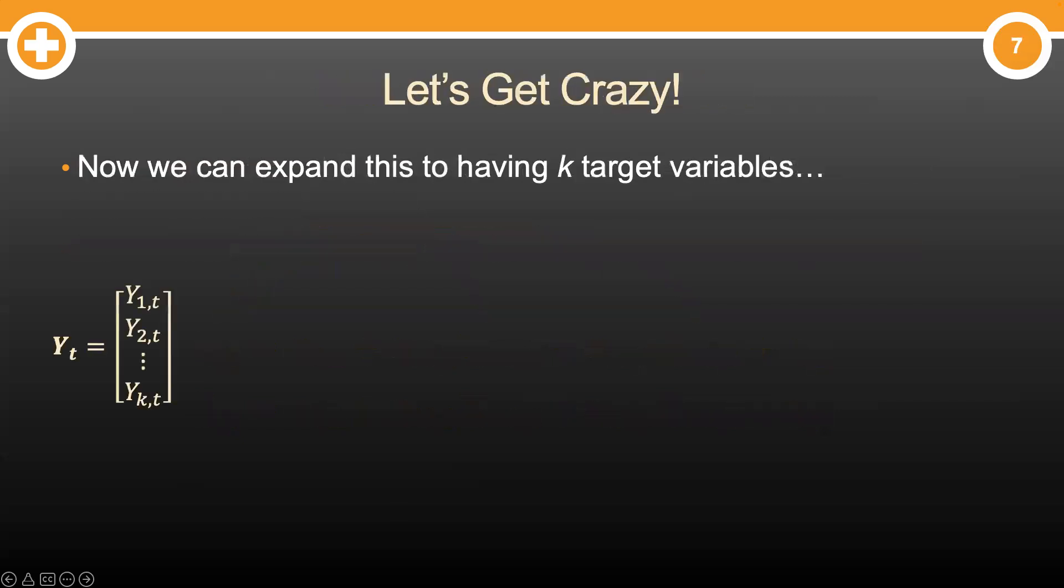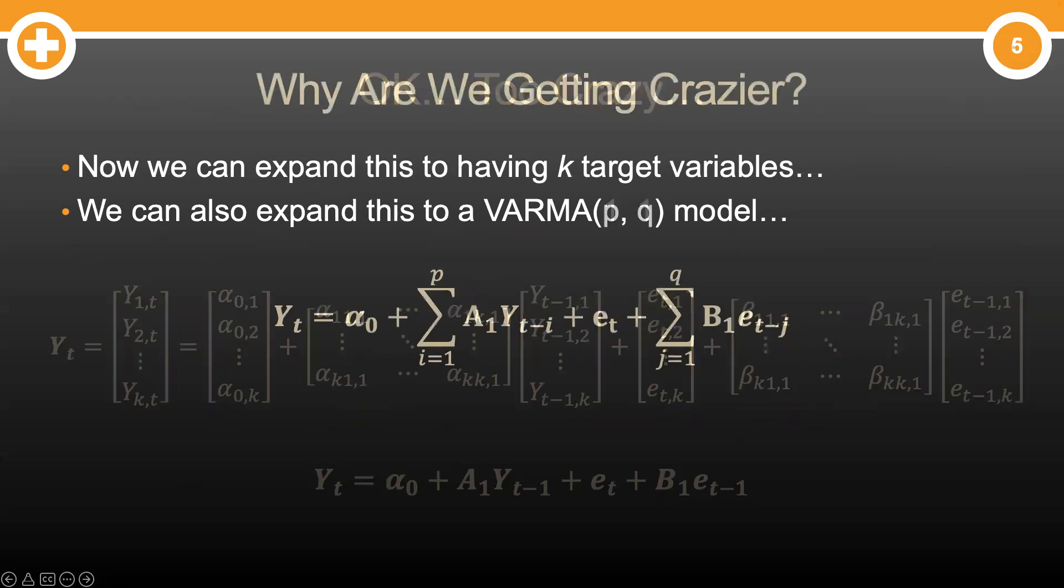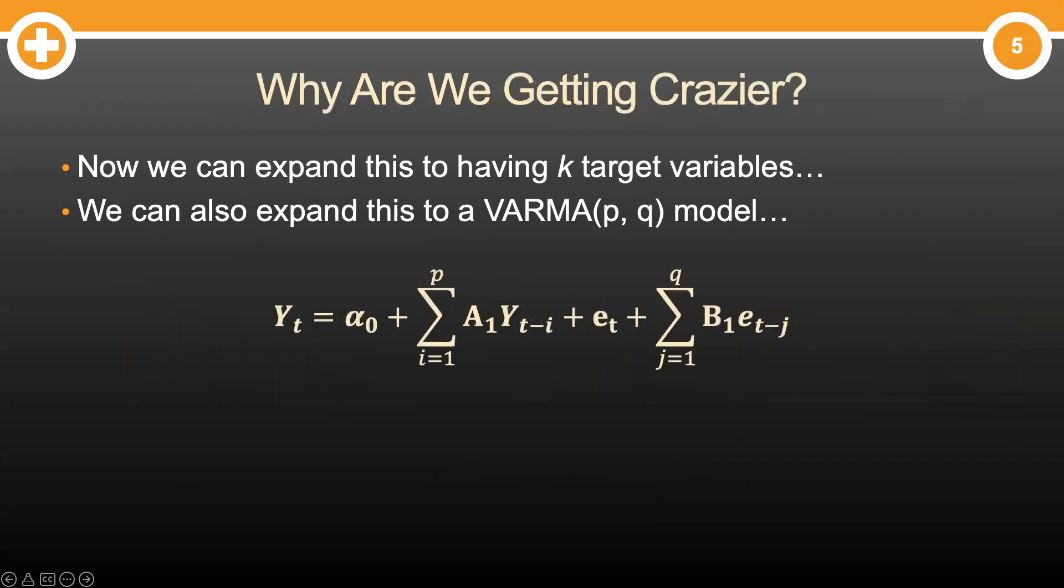Of course, this can be easily expanded. Let's imagine we have k target variables now. Let's also imagine that instead of just an AR(1) model, we also have an MA(1) term in here as well. This would make this the vector ARMA, or VARMA(1,1) model. As you can see, they get a little unwieldy to write, so we typically just write them like you see at the bottom. We use bolded letters to denote a vector or matrix instead of a single variable. We can get even crazier and expand this to the VARMA(p,q) model that has matrices and vectors, well, everywhere.